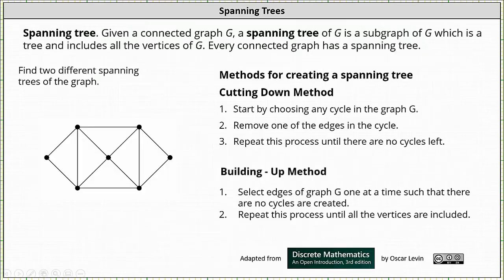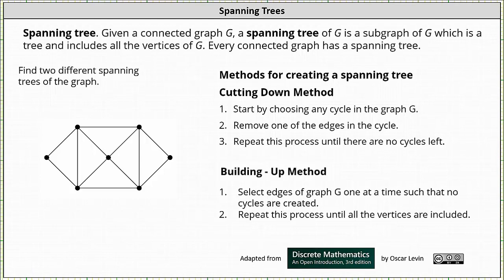There are two common methods for determining a spanning tree given a connected graph. One is called the cutting down method, which is the method we will use. There's also a method called the building up method. For the cutting down method, the first step is to start by choosing any cycle in the graph G. Step two, remove one of the edges in the cycle. Step three, repeat this process until there are no cycles left. For the building up method, the first step is to select edges of graph G one at a time such that no cycles are created. Step two, repeat this process until all the vertices are included.